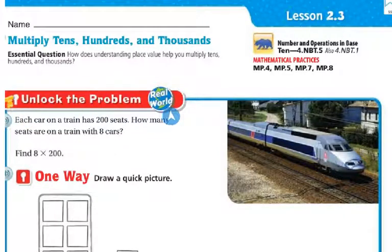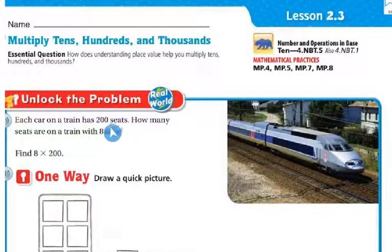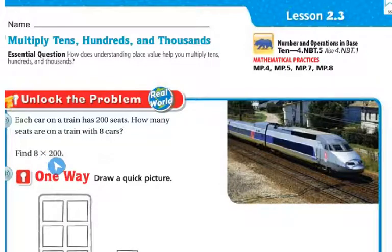Let's unlock the problem. Each car on a train has 200 seats. How many seats are on the train with 8 cars? So we're going to find 8 times 200.